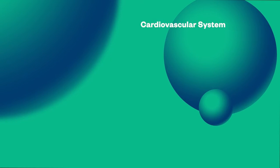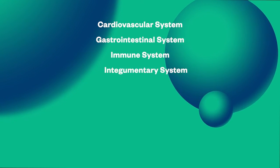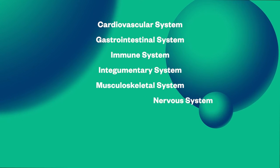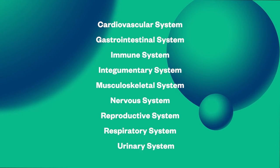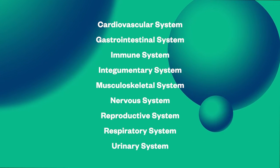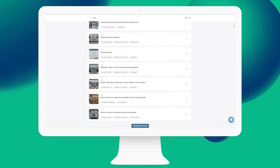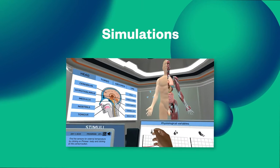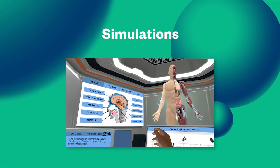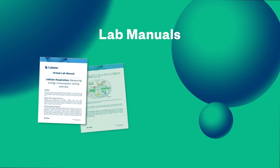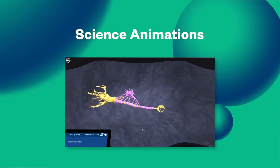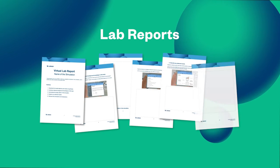As an instructor, you save time by using a single plug-and-play solution that covers a range of topics in both anatomy and physiology. Labster's vast library of science resources also helps level-set your students. You can select from hundreds of learning tools in biology and chemistry to cover key prerequisite material.